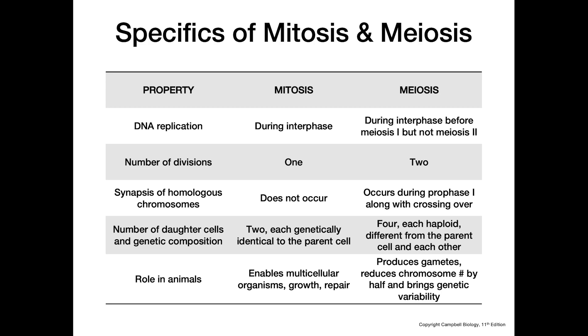Moving on to the number of divisions: in mitosis we have one, and in meiosis we have two — one in meiosis I and one in meiosis II.